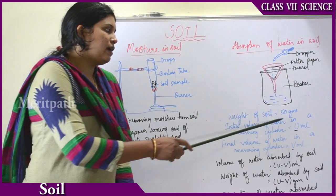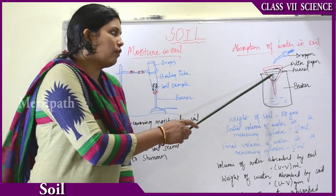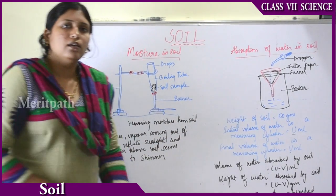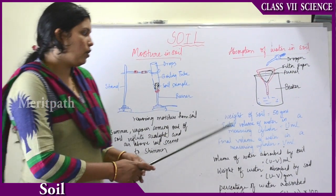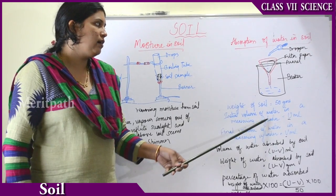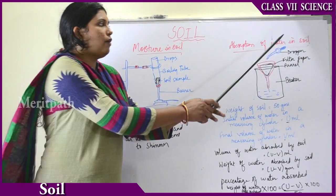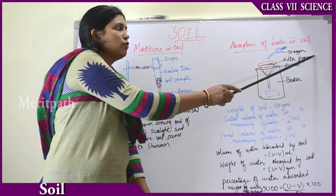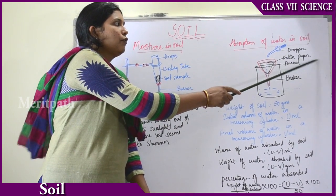Suppose the weight of the soil you have taken is 50 grams. The initial volume of water in the measuring cylinder — suppose you have taken 50 ml.